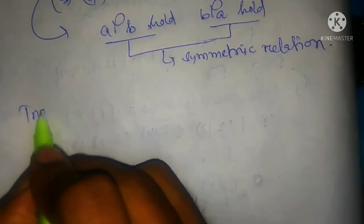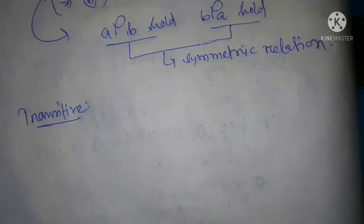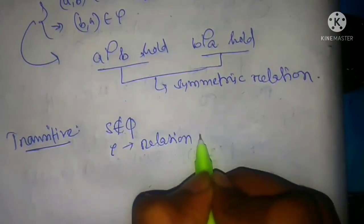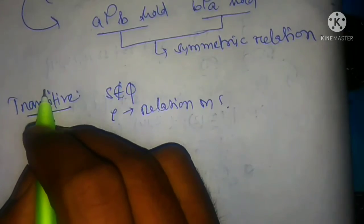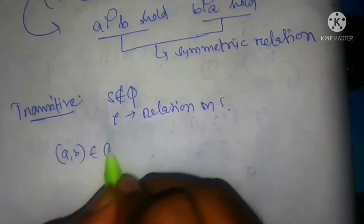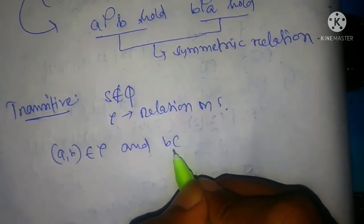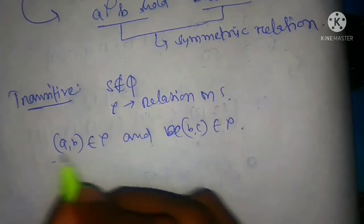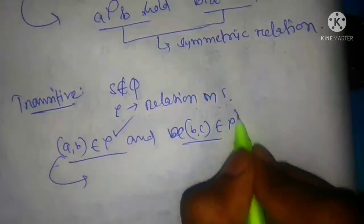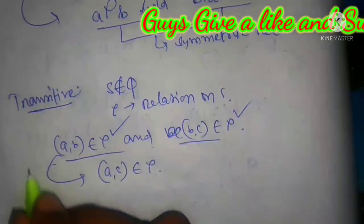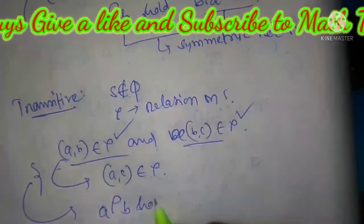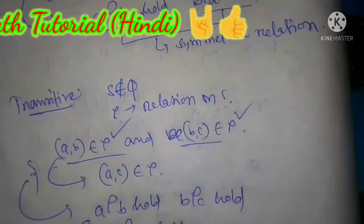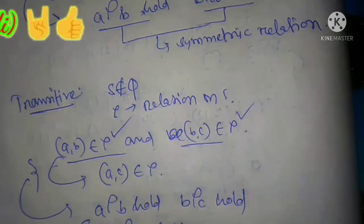And now, transitive relation. Let S be non-empty and Rho be a relation on S. Rho is said to be transitive if (a, b) belongs to Rho and (b, c) belongs to Rho, then (a, c) belongs to Rho. That is, if a is related to b and b is related to c, then a is related to c. Examples will be shown in another video.